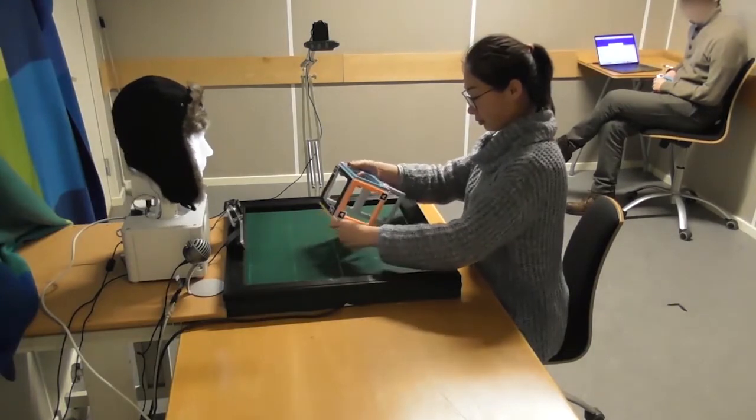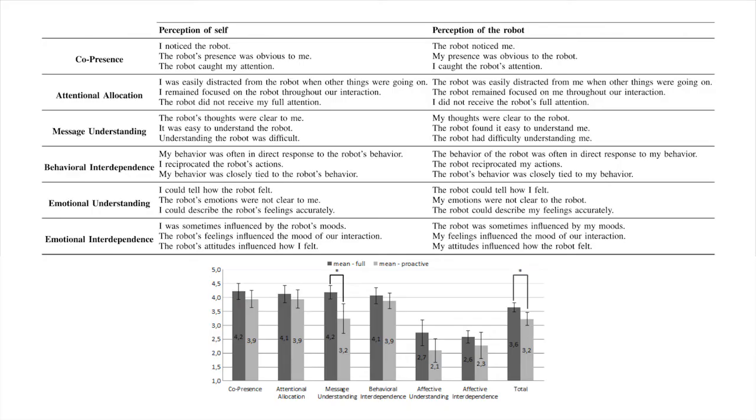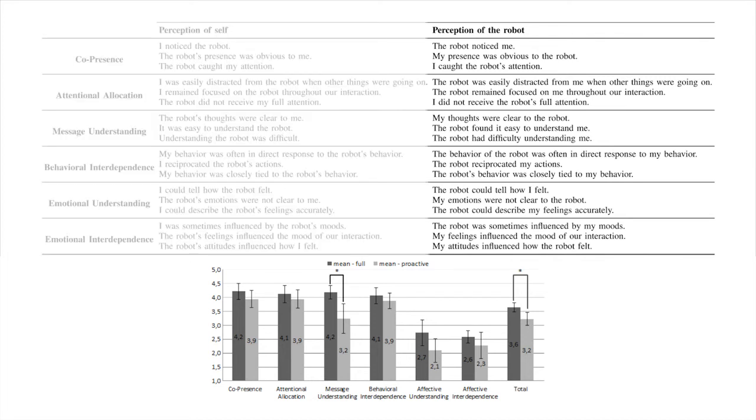In a between-subjects experiment, compared to a control condition, participants perceived the robot in the experimental condition as more socially present, particularly in measures that require participants to employ their theory of mind to assess the robot's perception capabilities. Please consult the paper for more details.